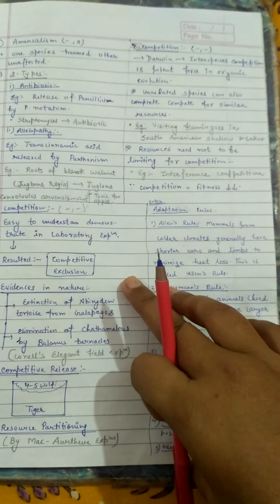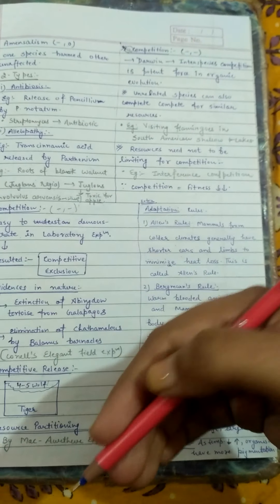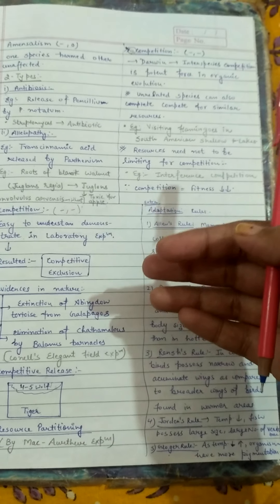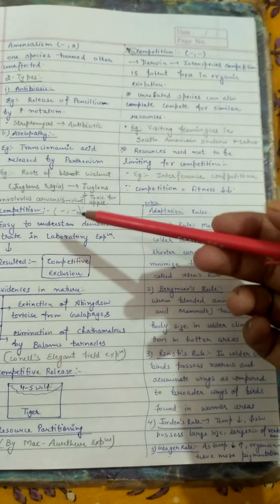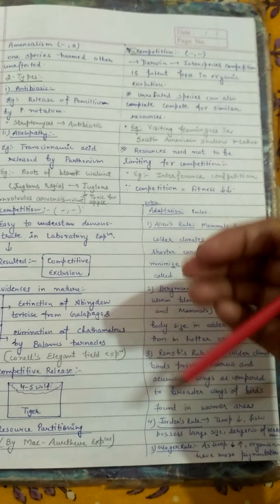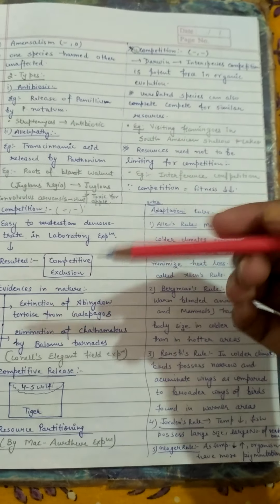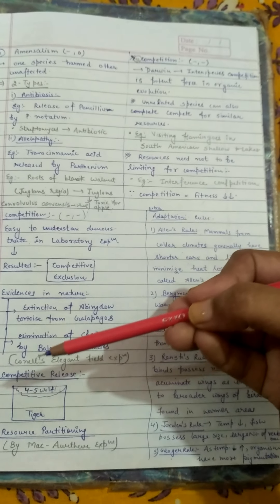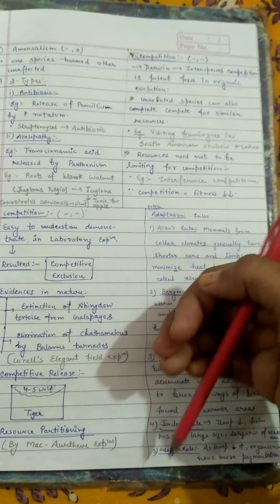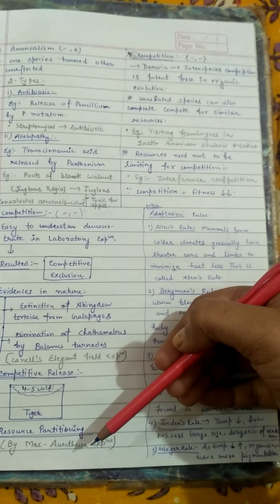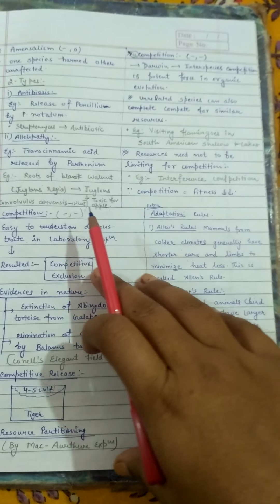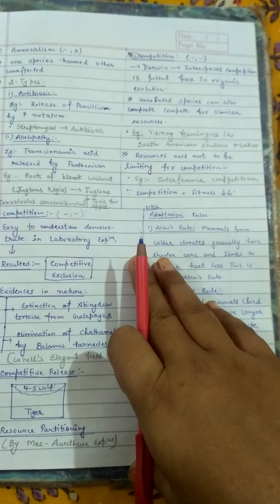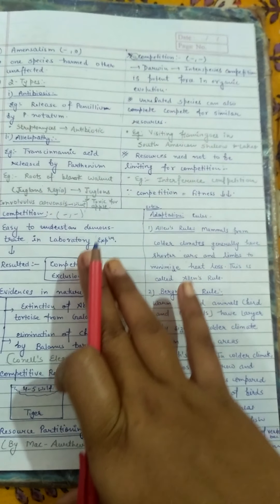In competition, different biologists have done different experiments. On the basis of those experiments, they have shown that competition takes two forms: either it can be competitive exclusion, or it can be competitive coexistence. In the last video, we studied competitive exclusion, competitive release, and competitive coexistence based on resource partitioning, and I have told you about the experiments that show competition exists in nature.